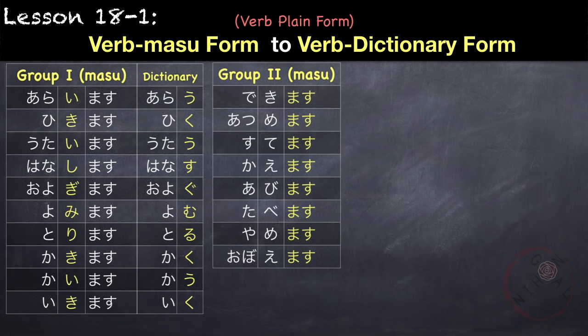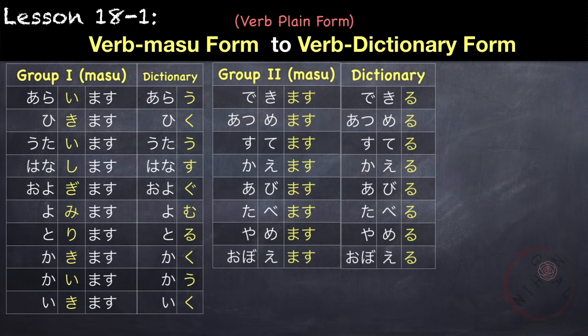For group 2, we just change masu to ru. For example, dekimasu becomes dekiru. Atsumemasu becomes atsumeru. Sutemasu becomes suteru. Kaemasu becomes kaeru. Abimasu becomes abiru. Tabemasu becomes taberu. Yamemasu becomes yameru. Oboemasu becomes oboeru.